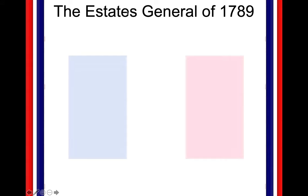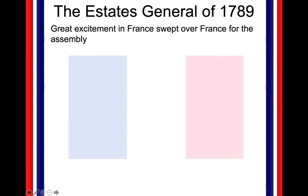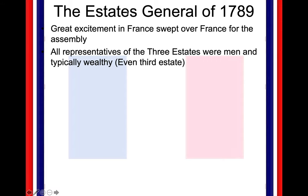When we last left off, France is in debt. They are having financial troubles — a lot of financial instability. Louis XVI is forced to convene the Estates General in 1789. There was a lot of excitement in France over this, and you had representatives from all three estates convene to talk about their problems.